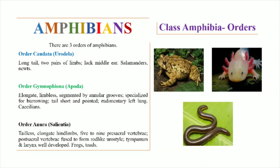In Order Anura or Salientia, the adults are tailless and they have elongated hind limbs that are modified for jumping. They possess five to nine presacral vertebrae, whereas the post-sacral vertebrae are fused to form a rod-like urostyle that supports the pelvic girdle of anurans. They have a well-developed tympanum and larynx. It includes frogs and toads.